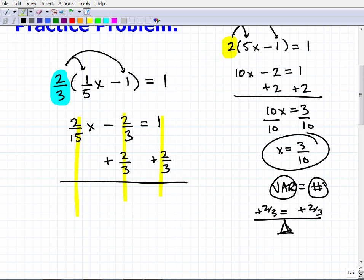Let's continue forward. Now you want to add down in a column manner. You can see that this negative 2/3 plus a positive 2/3 is going to go away. That's exactly what we want - we're removing it from the left hand side of the equation. So it's going to leave us with 2 over 15x is equal to 1 plus 2/3 or 1 and 2/3. But let's write that as a mixed number, as an improper fraction. That's gonna be 3 times 1 is 3 plus 2 is 5/3.